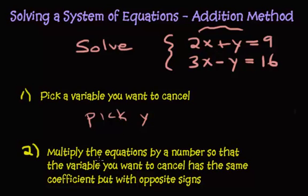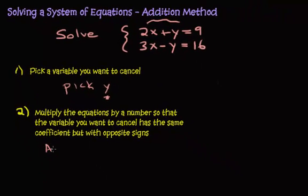Step two says multiply the equations by a number so that the variable you want to cancel, the y, has the same coefficient. Coefficients mean the numbers in front of the variable. I want the numbers in front of y to be the same but with opposite signs. In front of the y, we have 1 and negative 1, so they're both ones where 1 is negative and 1 is positive, and that's exactly what I want. Same coefficient, opposite signs. I'm going to say already done.